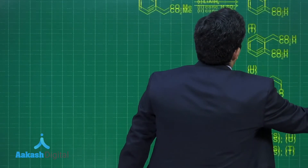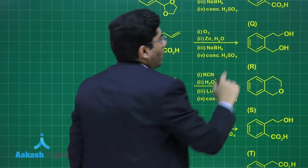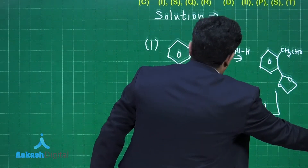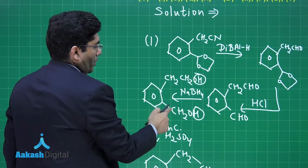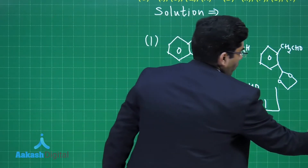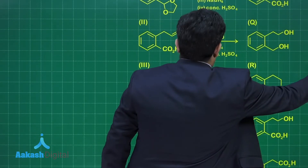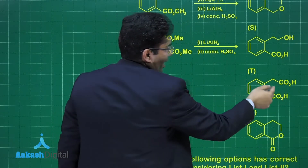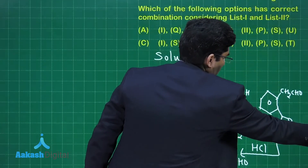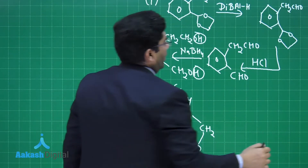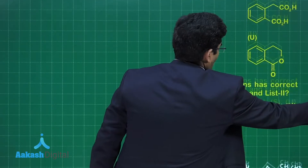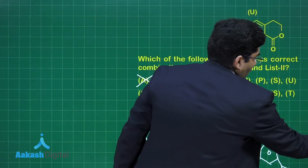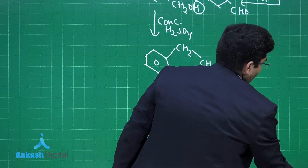Q is this particular compound, and we are getting it in our reaction — it is the second-to-last intermediate. If we talk about T, T is a compound with two acidic groups together, and we are not getting anything like that. So we can say that option A cannot be the answer. Now let us move to reaction number 2.